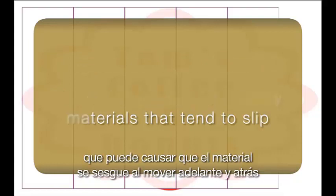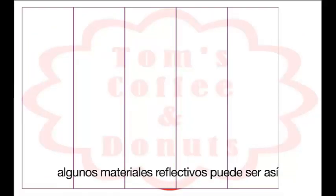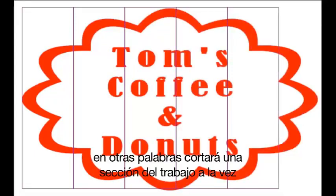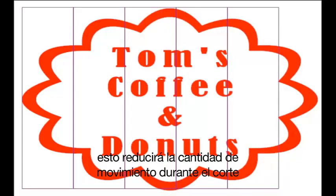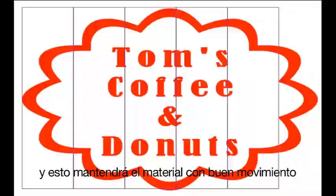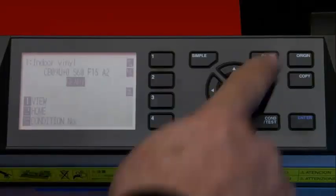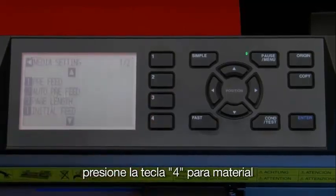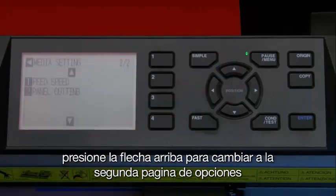Another function to use for obtaining good tracking is auto paneling. Picture this scenario: you are cutting a stiffer media that tends to slip, causing the media to skew as it moves back and forth — some reflective materials can be like this. Auto paneling is ideal for situations like this. It can panel a job in sections; in other words, it will cut the job one section at a time. This reduces the amount of movement during the cutting operation and thus keeps the media on track.